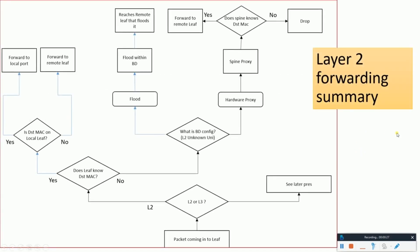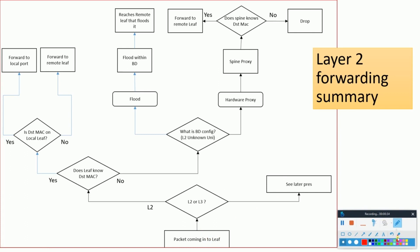The flow inside the fabric is based on the bridge domain configurations. When the first packet hits the leaf, the first thing it checks is whether the packet is L2 or L3. Since we are understanding the layer 2 forwarding summary here, I'll discuss the L3 part in later sessions. Let's consider the packet is L2.